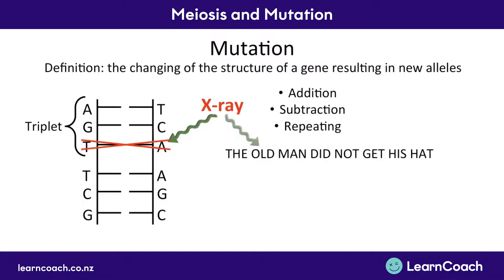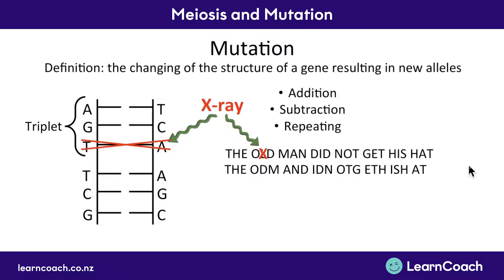What this x-ray does is analogous to knocking out a letter from a sentence — it causes everything to shift. Instead of 'the old man did not get his hat,' if we take out the letter L, it reads something completely different and doesn't make sense at all. That is the problem with x-ray mutation: it can cause our DNA to be misread. However, just occasionally, it might create new words and new sentences the body can read, creating a new allele that gets expressed.